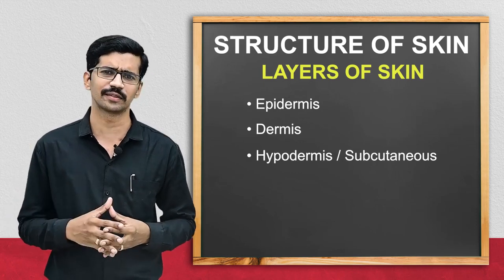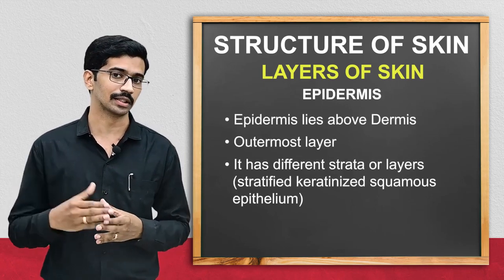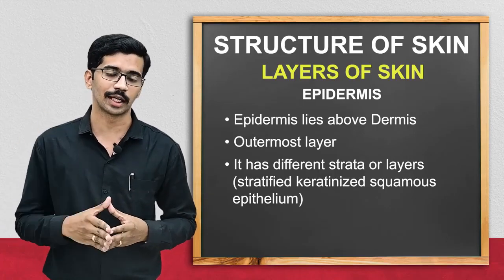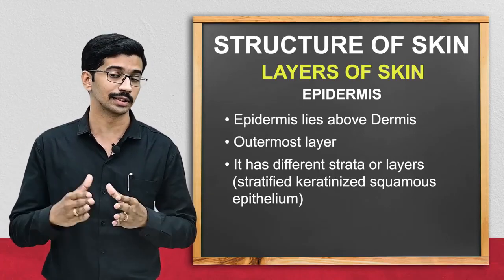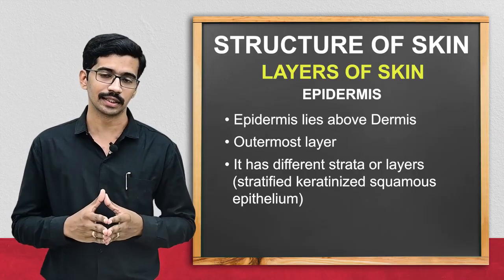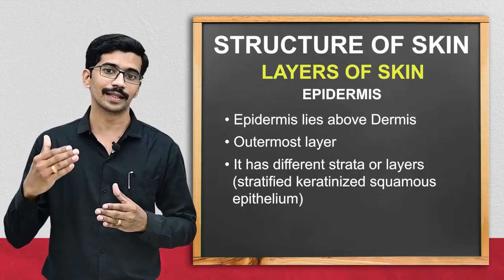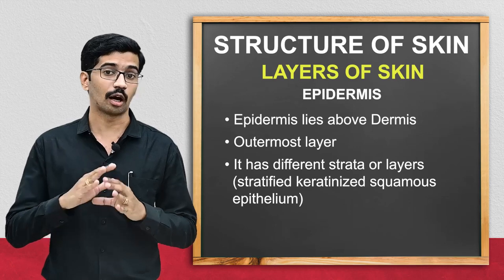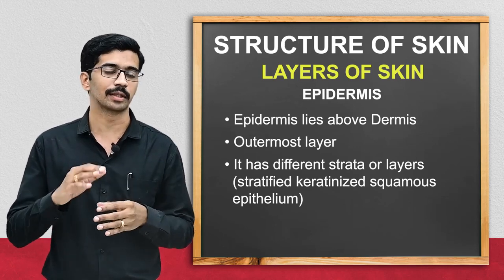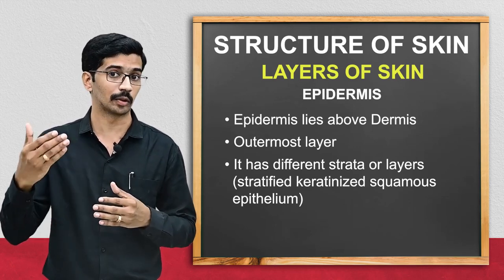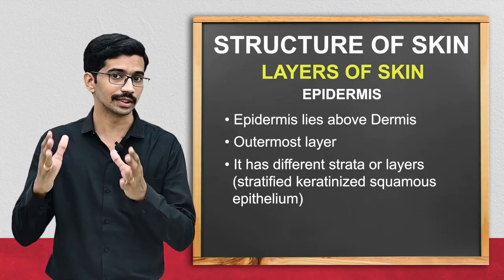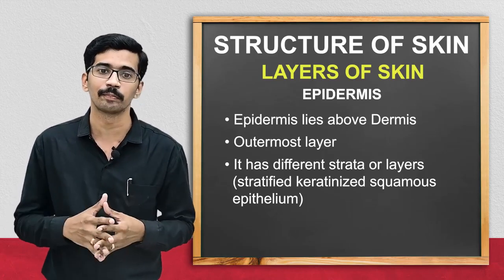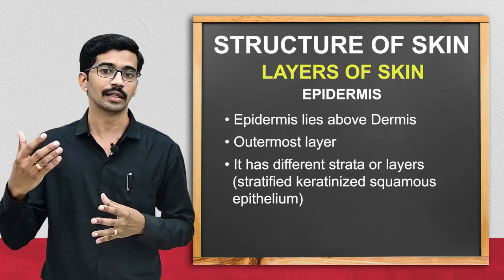The first layer is the epidermis. The word itself tells us: 'epi' means above 'dermis'. That means this particular layer is seen above the dermis layer. We can say this is the outermost layer of the skin — if you observe a person, what we are seeing as skin, that outer layer, is nothing but the epidermis.